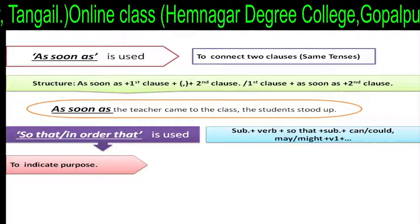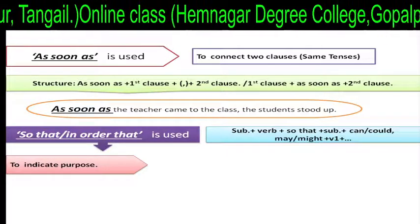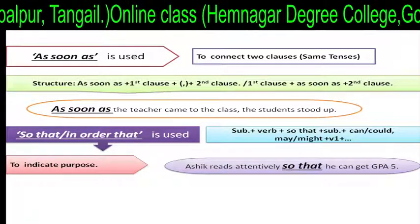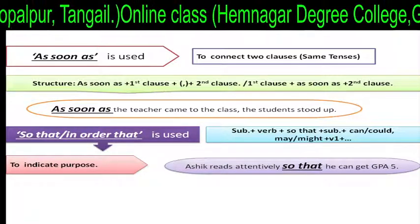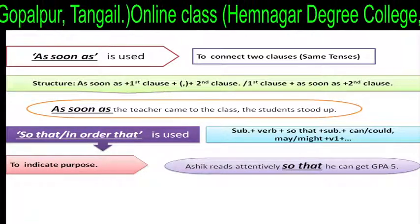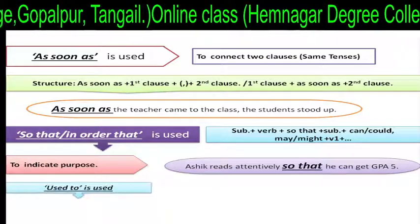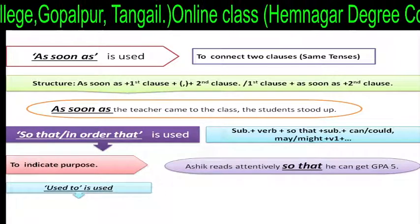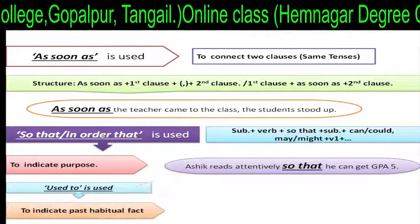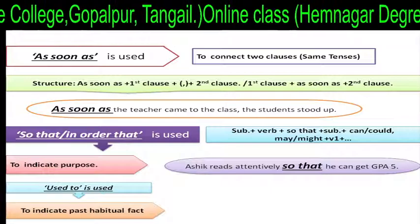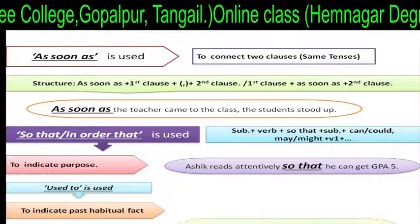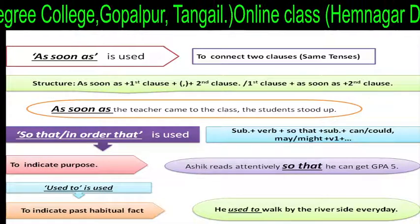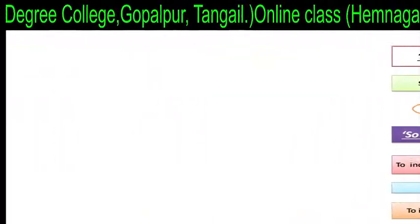For example: 'Arshig reads attentively so that he can get GPA 5.' Used to is used to indicate a past habit or fact. For example: 'He used to walk by the riverside every day.'